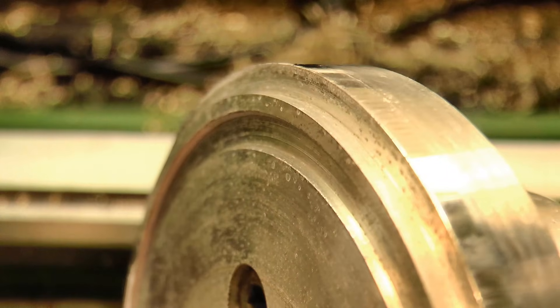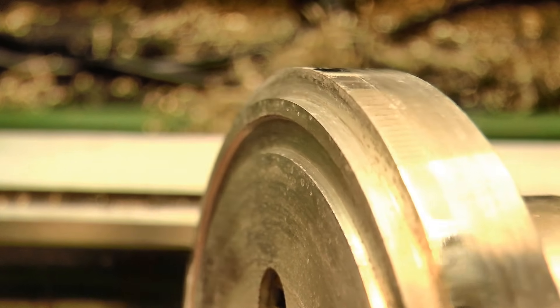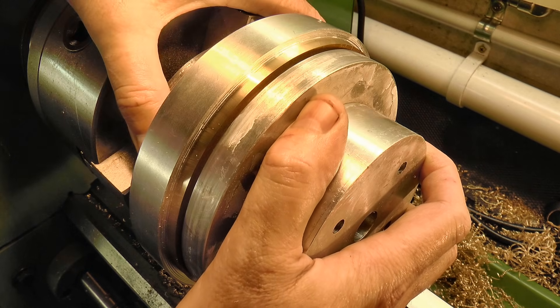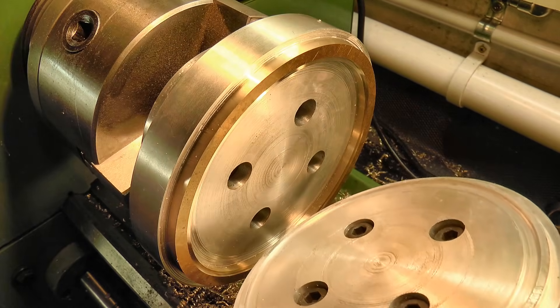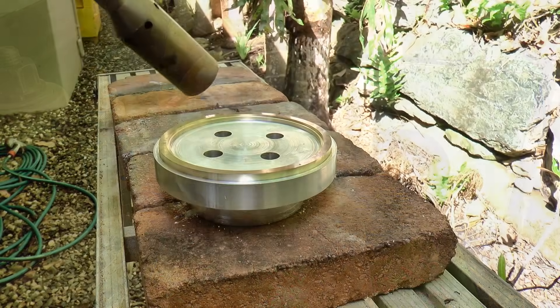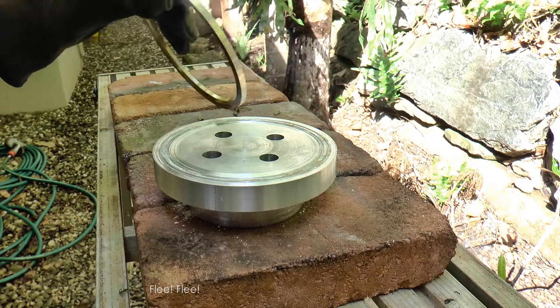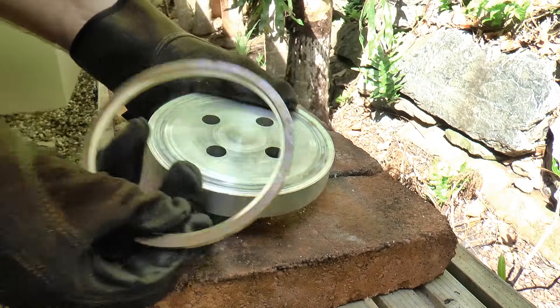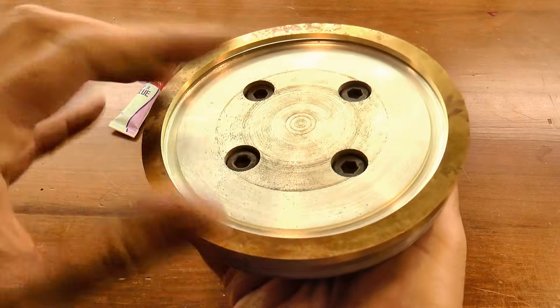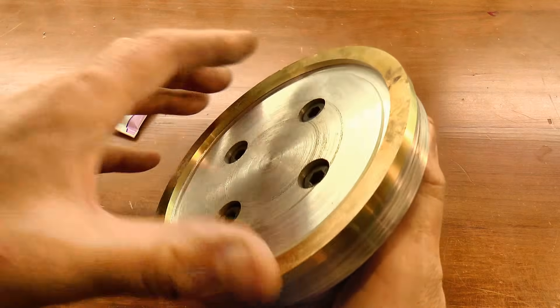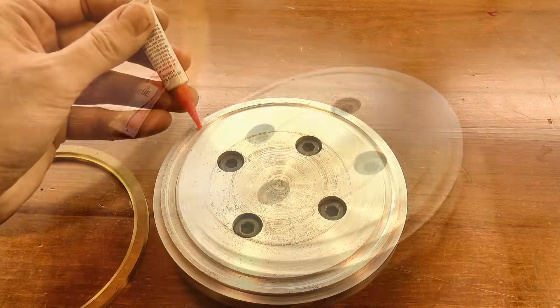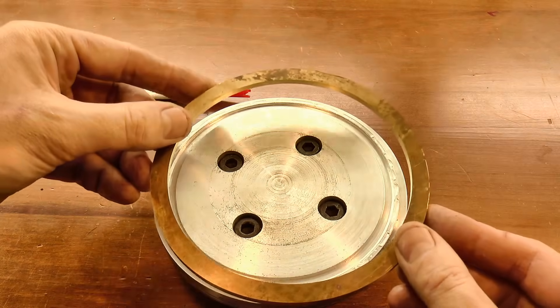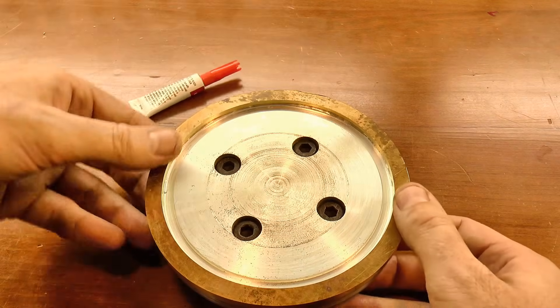I've machined a register on a second arbor to be a close fit in that recess. This arbor will then hold the part from the other side so that I can machine the other face. The fit with the register is nice and close, all it needs is a small amount of superglue to hold it in place. And off camera I gave it a light facing cut to true up the surface for the next operation.